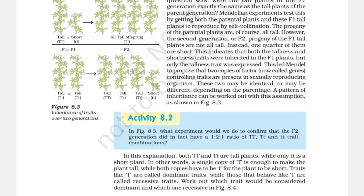Activity 8.2: In Figure 8.3, what experiment would we do to confirm that the F2 generation did in fact have a 1:2:1 ratio of TT, Tt, and tt trait combinations? In this explanation, both TT and Tt are tall plants, while only tt is a short plant. In other words, a single copy of T is enough to make the plant tall, while both copies have to be t for the plant to be short. Traits like T are called dominant traits, while those that behave like t are called recessive traits.